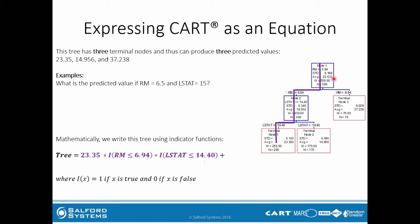The second path is shown by this orange line. We take the predicted value for terminal node 2, which is 14.956, and multiply it by the indicator functions leading down to terminal node 2. It's still RM less than or equal to 6.94 — the same first condition — because both paths initially go through this same node. The difference is that instead of LSTAT being less than or equal to 14.4, it is now LSTAT greater than 14.4. If both conditions are satisfied, the predicted value will be 14.956.